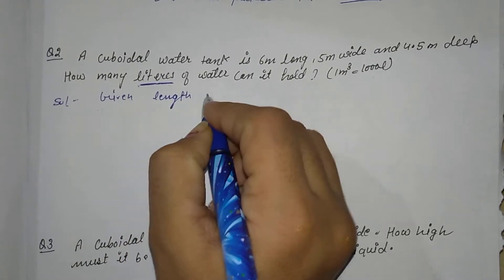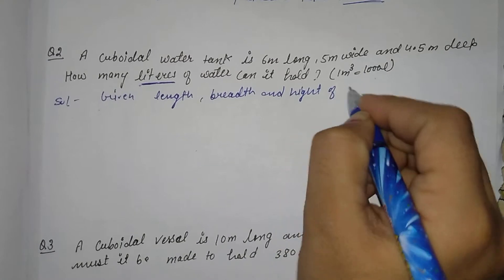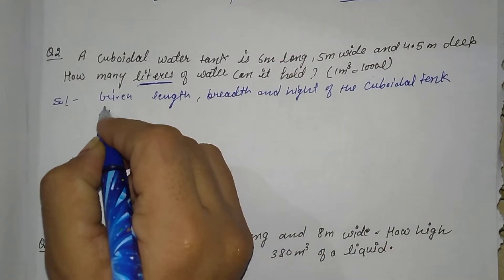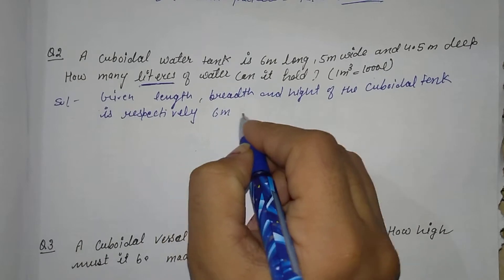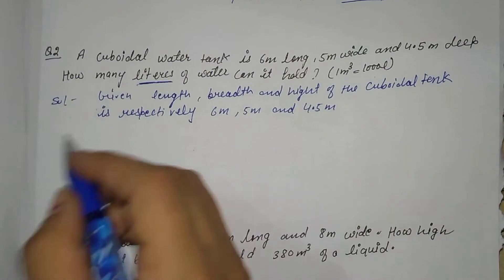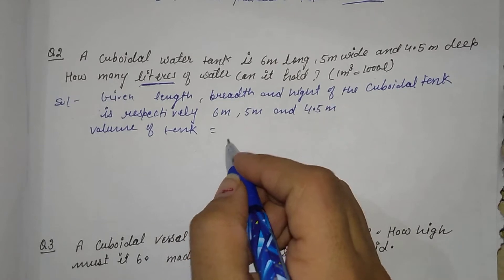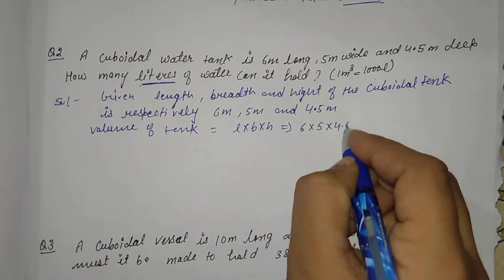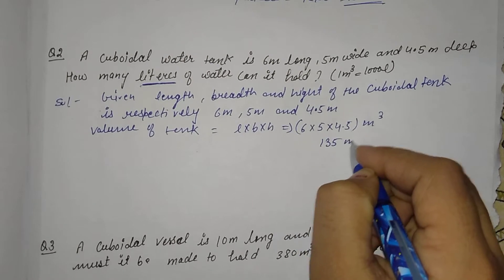Length, breadth and height of the cuboidal tank are given: 6 meters, 5 meters, and 4.5 meters. We will find the volume. Volume of tank = L into B into H = 6 into 5 into 4.5 meter cube = 135 meter cube.